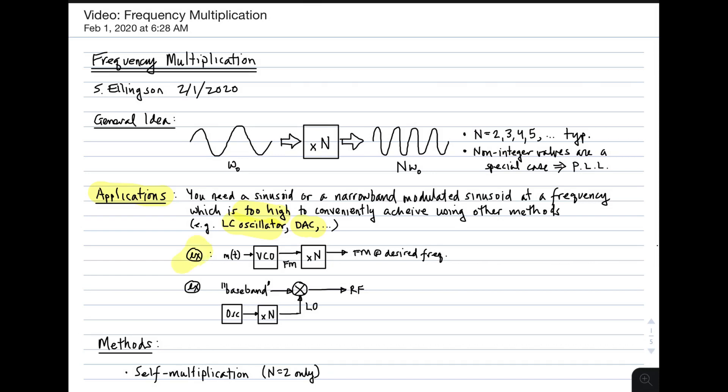So two applications of this. One, this is a method for generating FM frequency modulation at RF frequencies. And the idea is you could use the message signal as a control to a voltage-controlled oscillator, which generates FM, and then you could multiply frequency by n, and that would give you frequency modulation at the desired frequency.